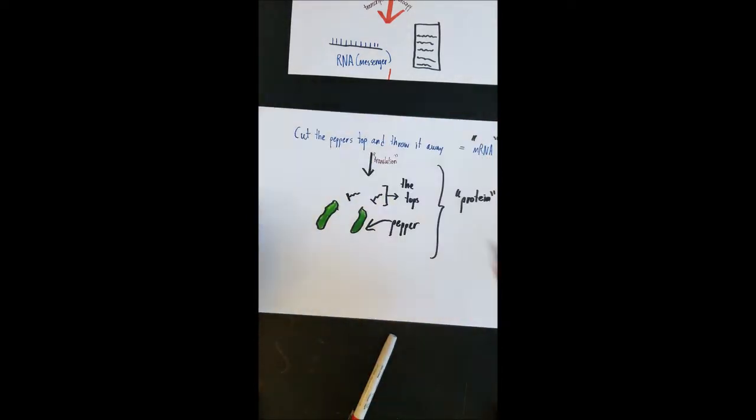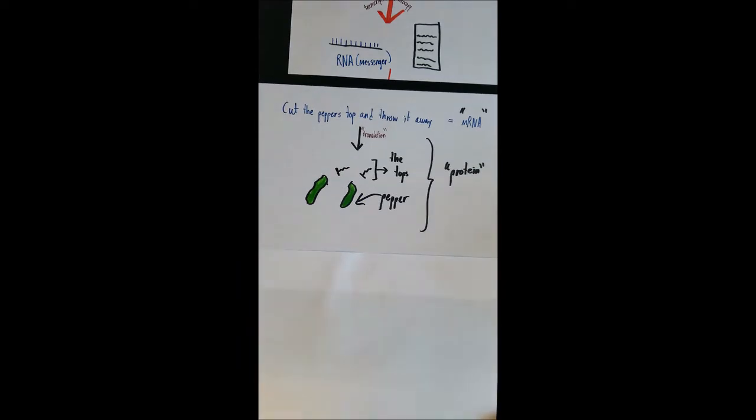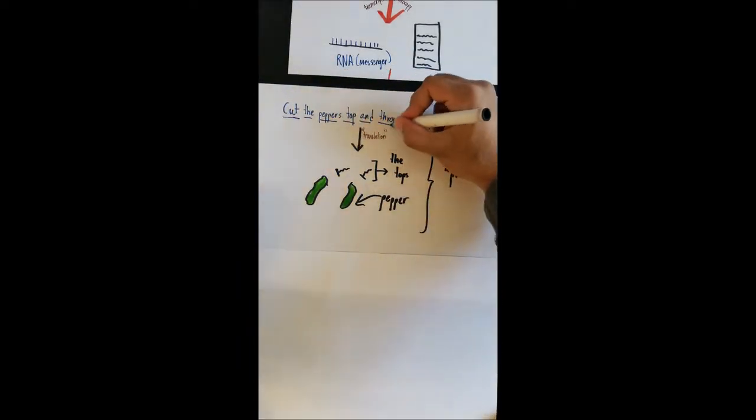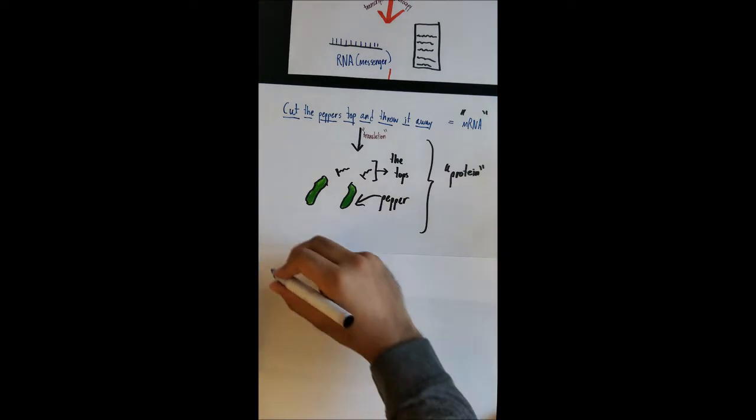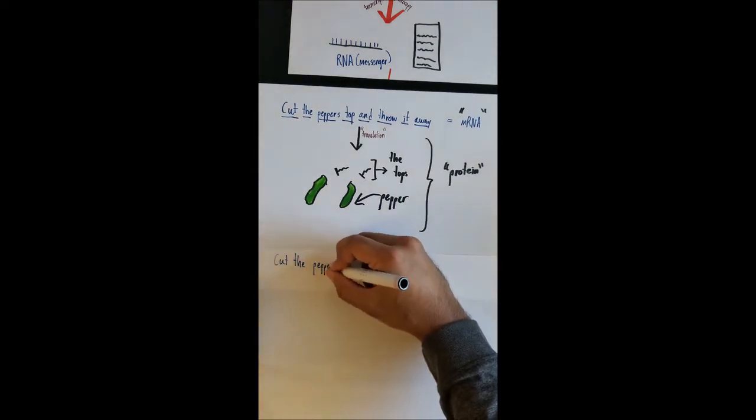Now, I only need to do this because I read the instructions in the correct frame. I started with the letter C and I read each letter consecutively. Now, let's see what would happen if I frameshifted while I was reading my messenger RNA.